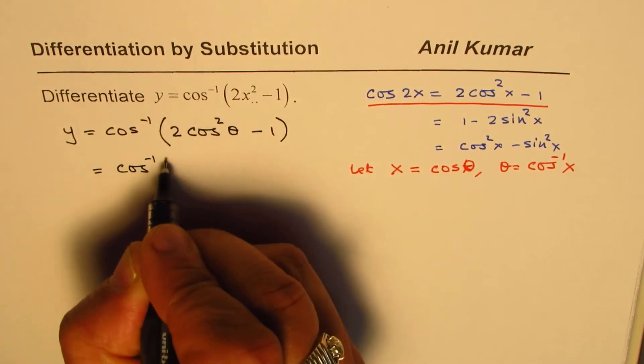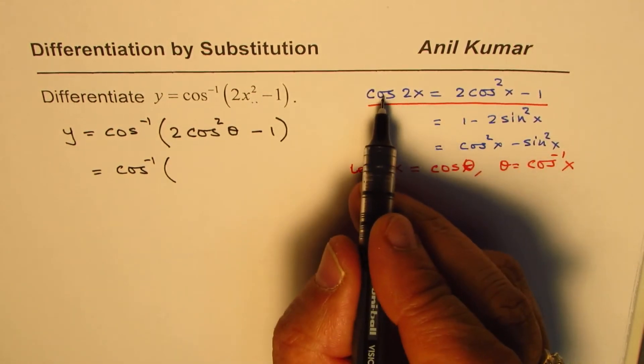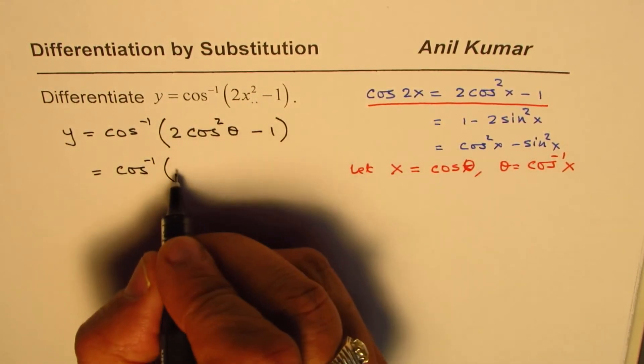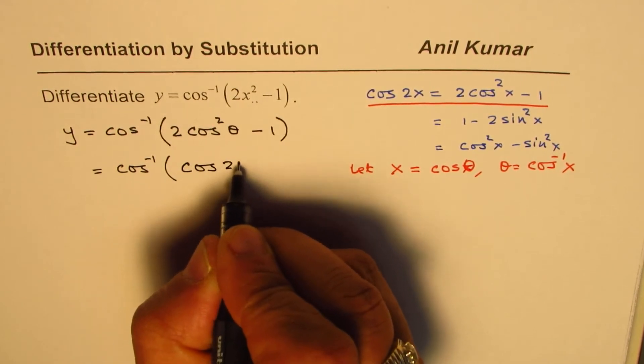Now, cos inverse of 2 cos square theta minus 1 is cos 2 theta. So we could write this as cos inverse of cos 2 theta.